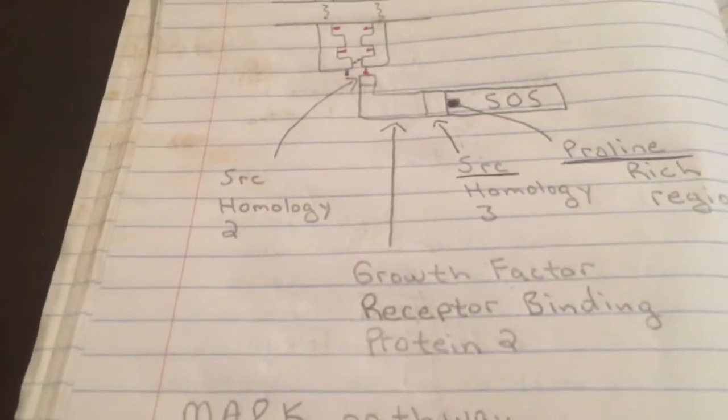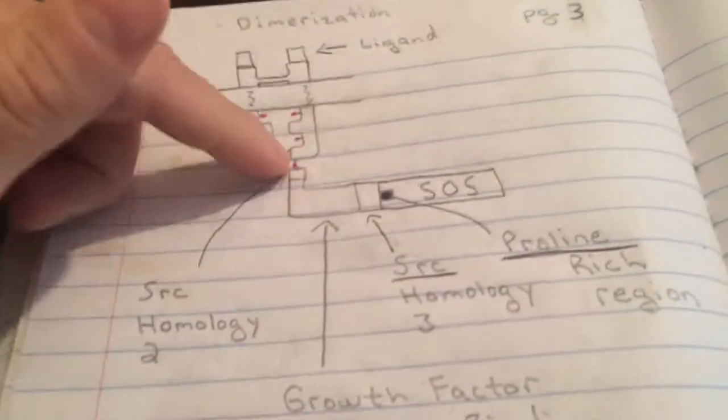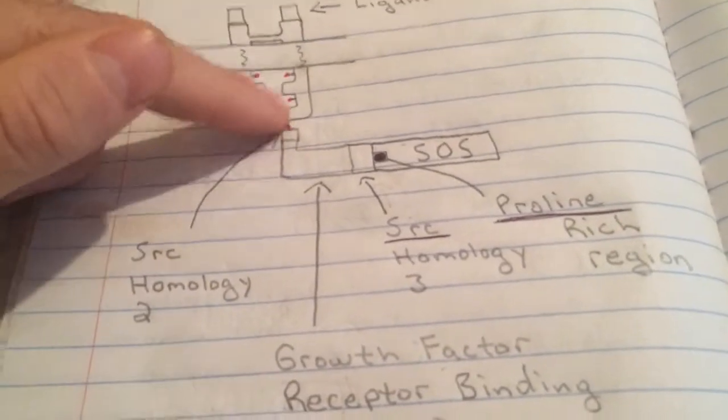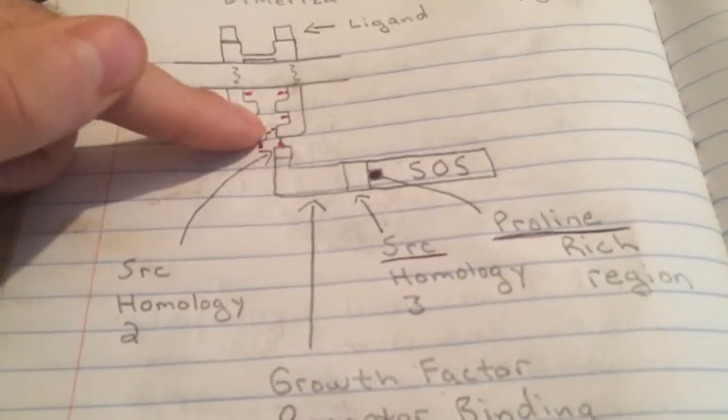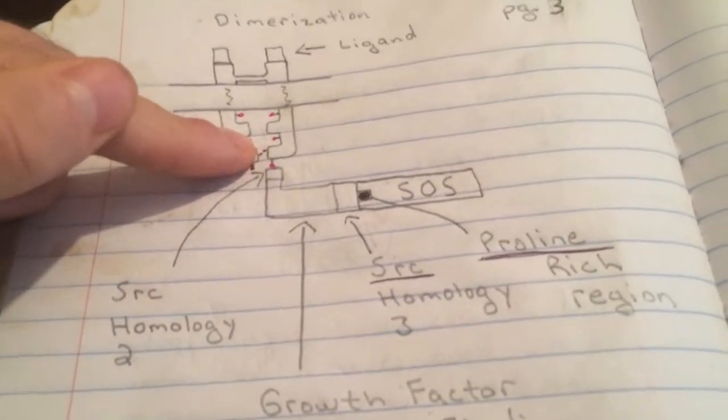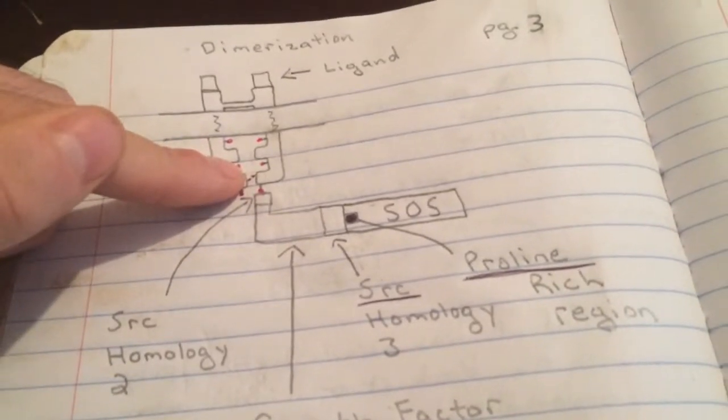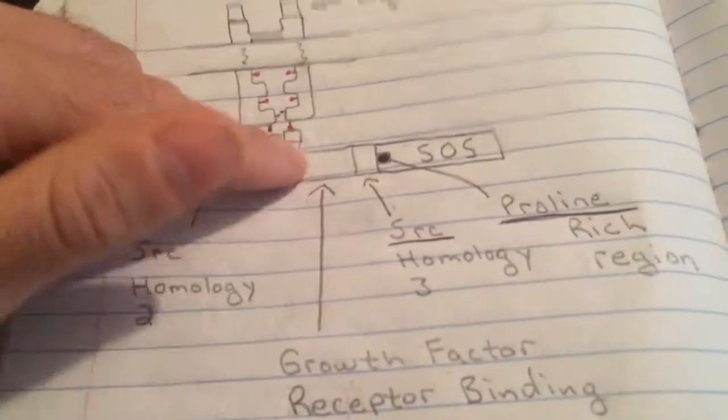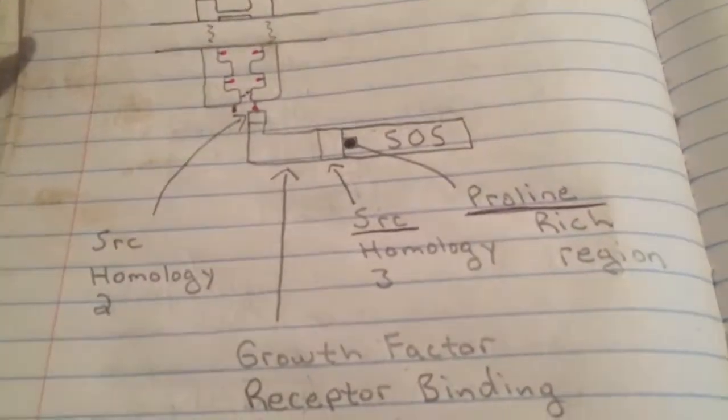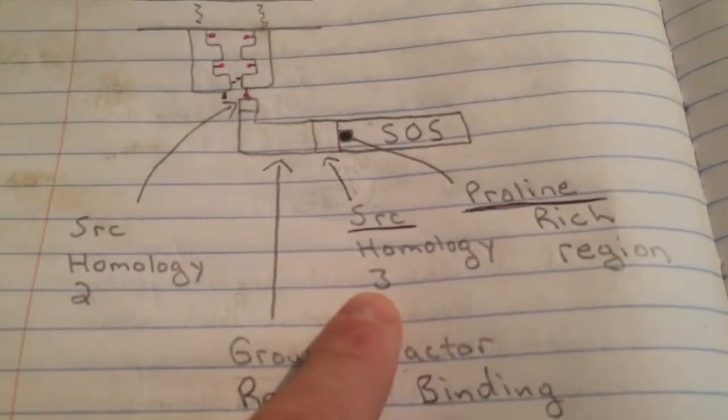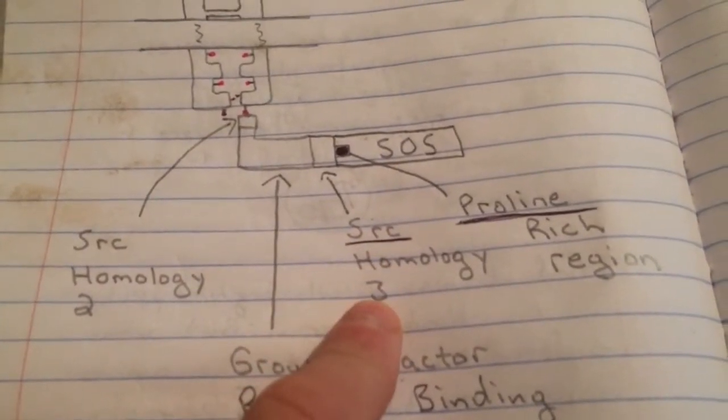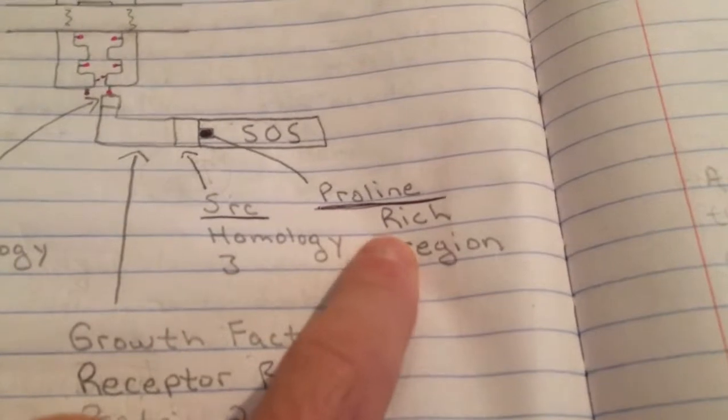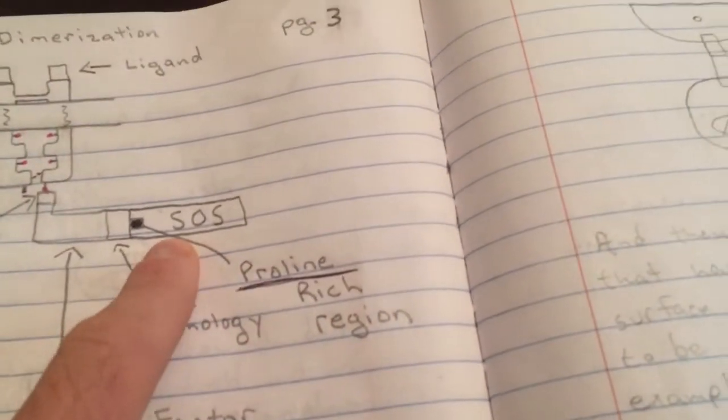It will be dimerization and down here autophosphorylation will occur where they're going to share phosphate groups with one another and become activated. And when they become activated, there's a lot of things that can happen but one thing that can happen is it can recruit proteins. And again we're seeing a recurring theme here. Down here this is a different protein. This is growth factor receptor binding protein 2, which has a protein domain in it that's SRC homology 2. And SRC homologies are very good at binding to phosphotyrosines.